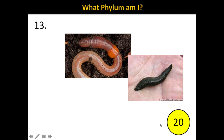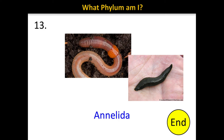Number 13. The correct answer is Annelida. Remember that Annelida refers to the segmented worms. Here we have a picture of an earthworm and a leech. Notice the high level of segmentation in these worms.